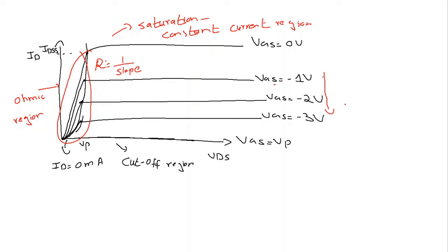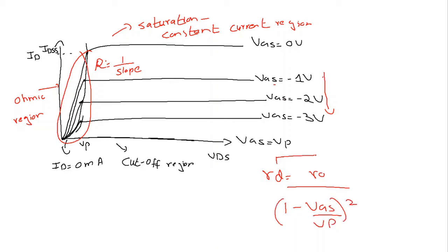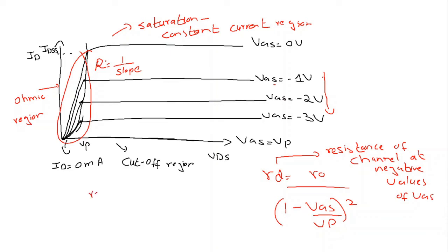We can express this with a simple equation: Rd equals R0 divided by (1 minus VGS divided by VP) whole squared, where Rd is the channel resistance at negative values of VGS, and R0 is the channel resistance at VGS equal to 0 volts. As we can see, the channel resistance increases as VGS becomes more and more negative.